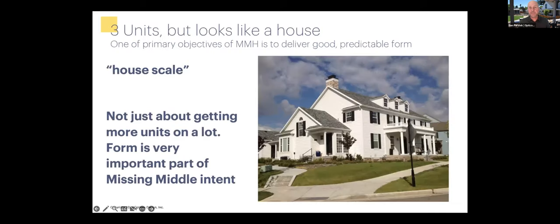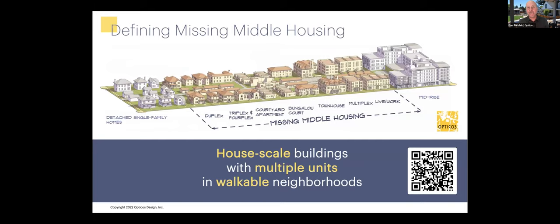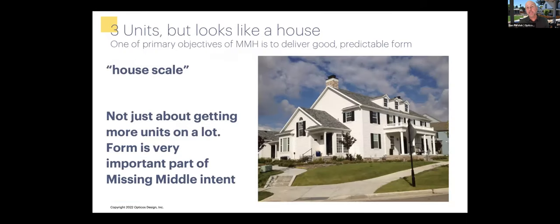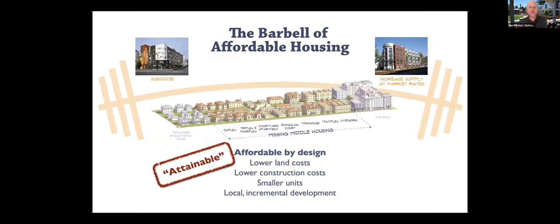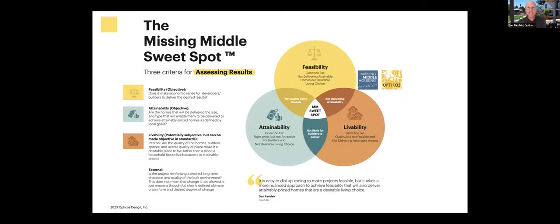The sweet spot diagram looks at feasibility, attainability, and livability. We found it's really easy to dial up your zoning and allow more development potential to make projects feasible from a pro forma standpoint. But oftentimes we see that's being done and it's actually missing on attainability. Livability is a key part as well — it's not just delivering housing for housing's sake, but delivering high-quality housing choices.